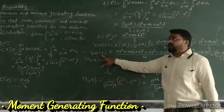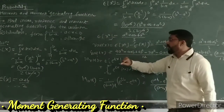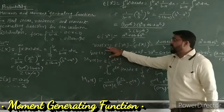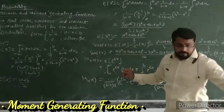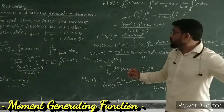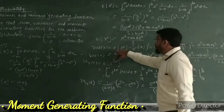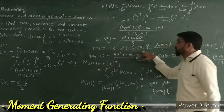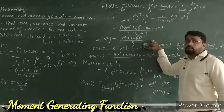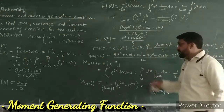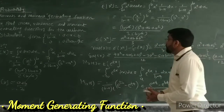Next we find the variance for the uniform distribution. The variance is given by E(x²) minus [E(x)]².